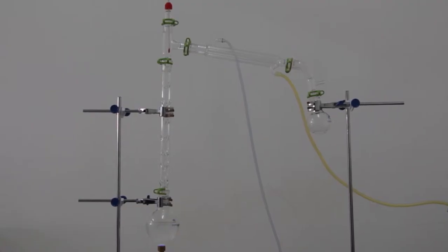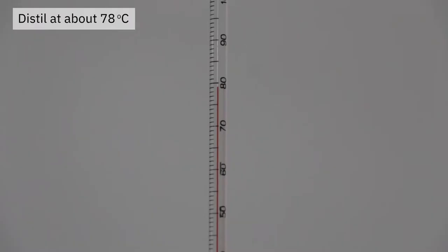The fractional distillation apparatus is set up as shown. The distillate previously is then transferred here and allowed to distill at a temperature of about 78 degrees Celsius. Ethanol is collected.